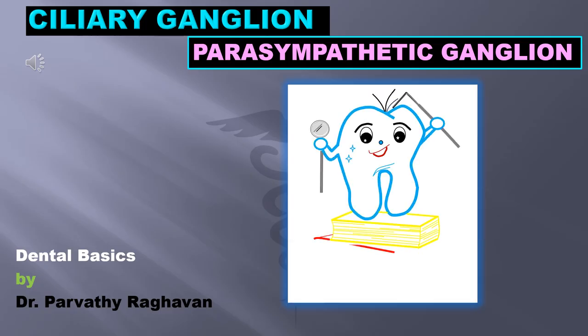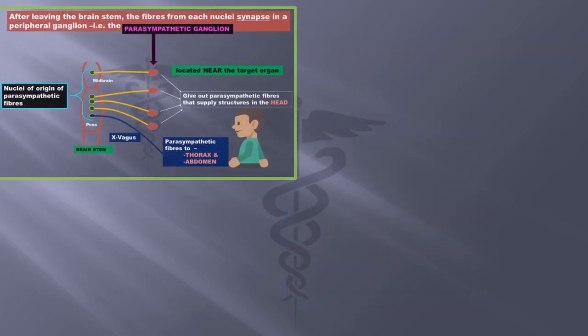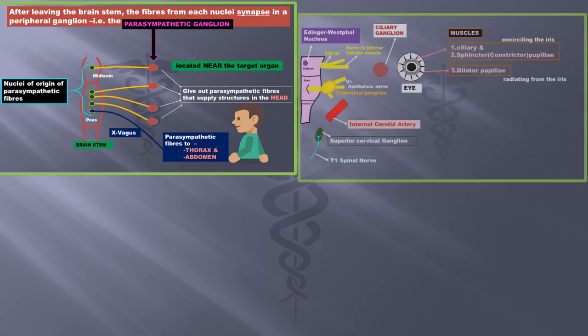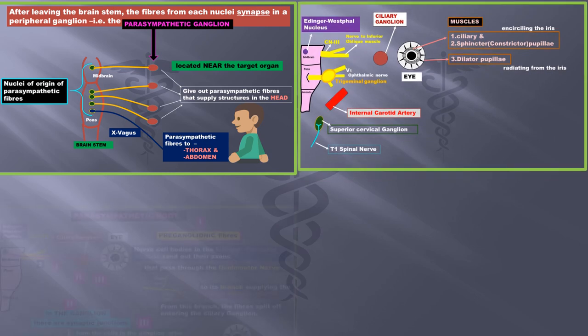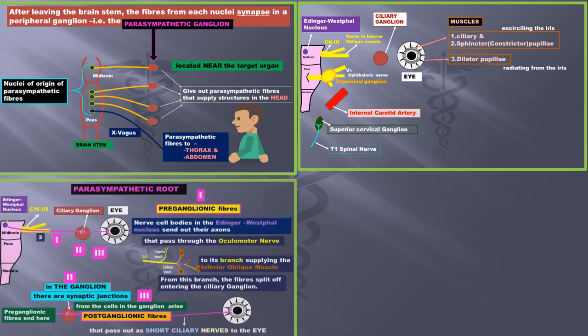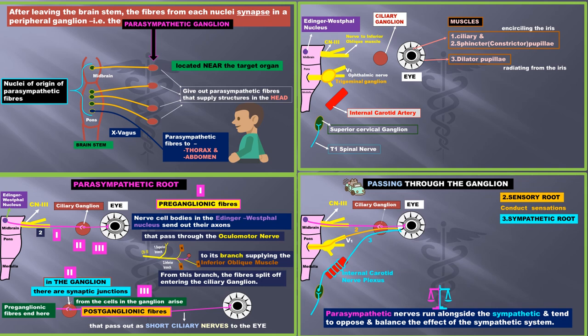Hello and welcome back once again to Dental Basics. I am Dr. Parvati Raghavan and today we are going to learn about the ciliary ganglia, which is a parasympathetic ganglia. The following topics will be covered: first, the common features of all the parasympathetic ganglia of the head; second, significant structures around the ciliary ganglia; third, the course of the parasympathetic root which is motor in function; and the other two nerve roots that are sensory and sympathetic.